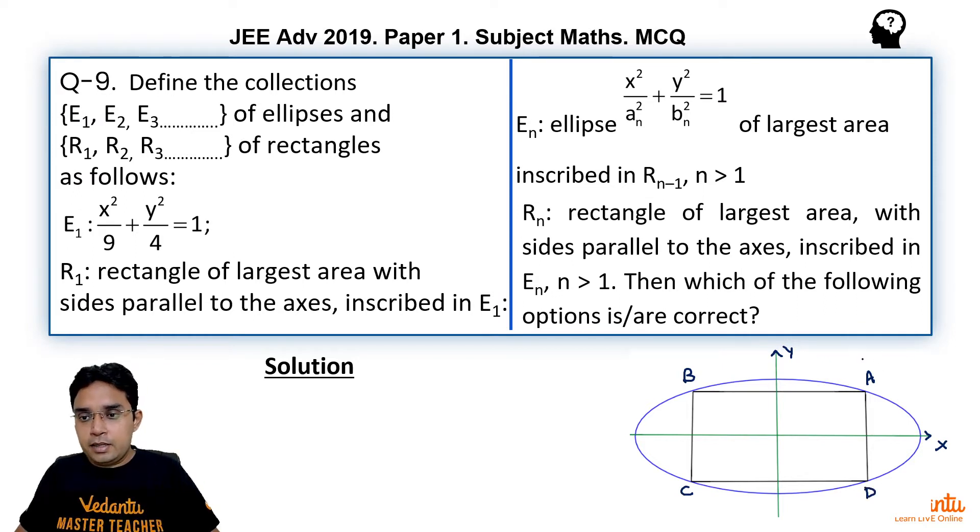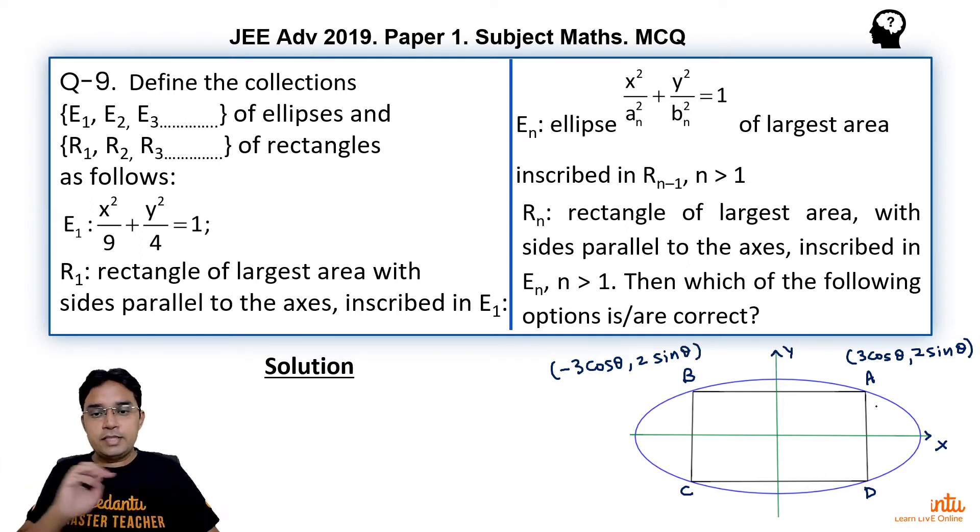I can take the coordinate of A as (3cosθ, 2sinθ) which is nothing but parametric coordinate of any variable point on the ellipse. The point B can be taken as (-3cosθ, 2sinθ). The y-coordinate will remain same because A, B is parallel to x-axis and x-coordinate will be just negative of what it was for A. Why it is so? We can see it by symmetry also and there is one more reason. Please understand.